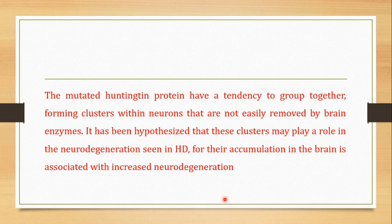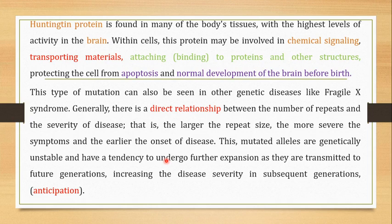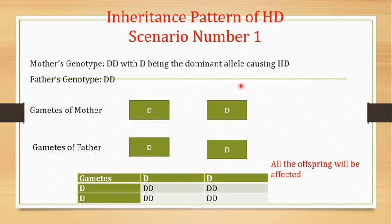It has been hypothesized that the mutated huntingtin proteins form clusters within the neuron, and these clusters are responsible for the neurodegeneration seen in HD. The huntingtin protein is normally present at its highest level in the brain and is responsible for chemical signaling, transporting materials, attaching to other proteins and substrates, protecting cells from apoptosis, and it is also important for normal brain development before birth.